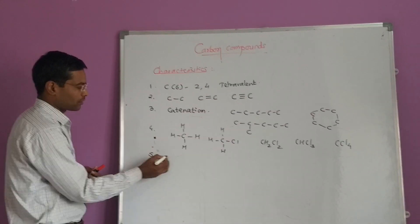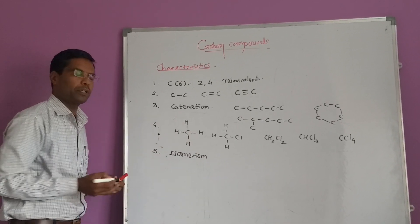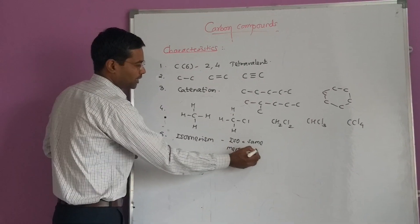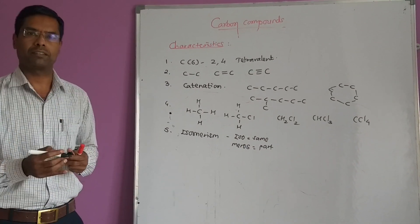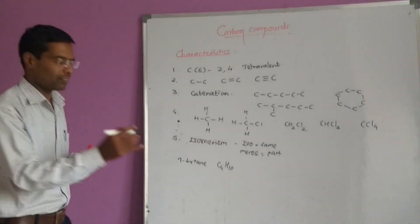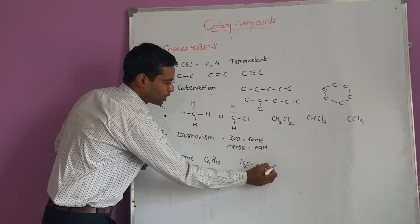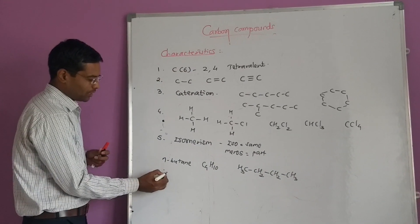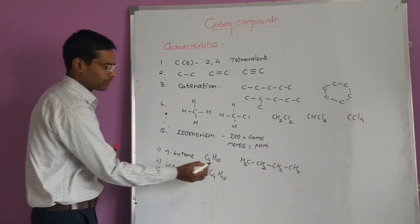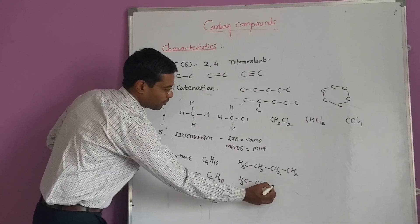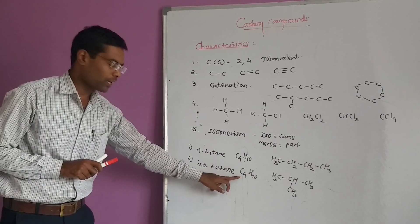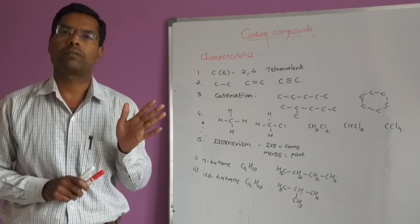Another important characteristic is isomerism. Carbon can show the property of isomerism. 'Isos' means same, and 'meros' means part. Take the simple example of n-butane: it has the molecular formula C4H10, and its structural formula is CH3-CH2-CH2-CH3. Another compound is isobutane, which has the same molecular formula C4H10 as n-butane, but a different structural formula. These two different compounds have the same molecular formula but different structural formulae — this property is called isomerism.